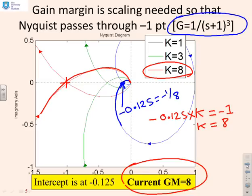If I multiply by less than 8 I will remain closed loop stable. If I multiply by more than 8 I'll become closed loop unstable.